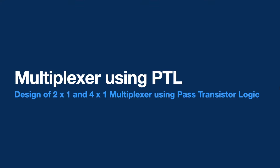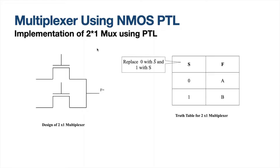In this video, we will be designing a 2x1 multiplexer and a 4x1 multiplexer using NMOS pass transistor logic. Here is a basic schematic of how a 2x1 multiplexer looks like. It is similar to AND, NAND, and other gates, but variables at the gate terminal as well as the input terminal will vary. We should derive it from the truth table. Here is a truth table for a 2x1 multiplexer.